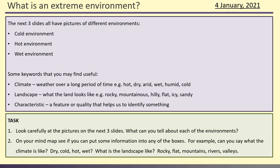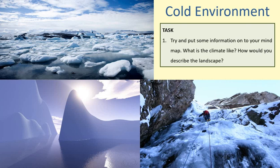Your task now is to look really carefully at the pictures on the next three slides and work out what you can tell about each of the environments. For the cold environment: what's the climate like — what words would you use to describe the weather? And how would you describe the landscape? Pause the video, look at each of the three pictures, and put that information onto your mind map under the cold environment section. Come back once you've finished.